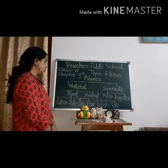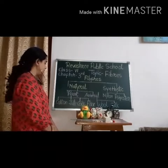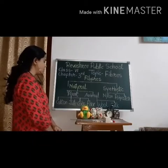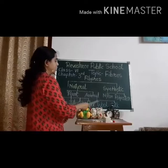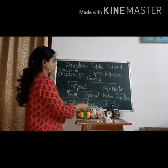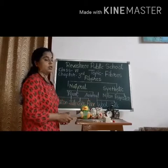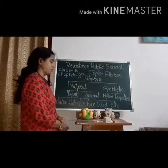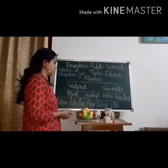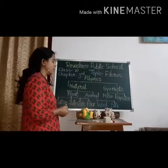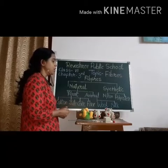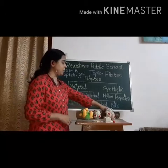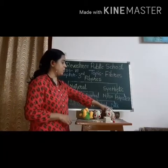Cotton and flax are the oldest fibers. Fibers are also obtained from animals like wool from sheep and camel. Sheep, goat, and camel are used to make fabric. Silk is made from the cocoon of the silkworm caterpillar.